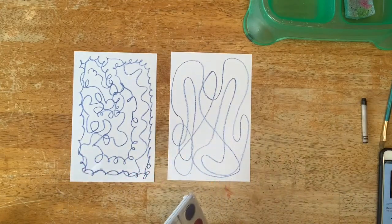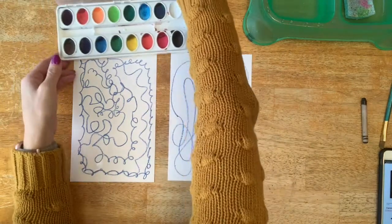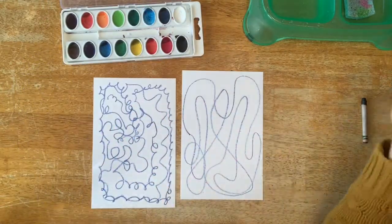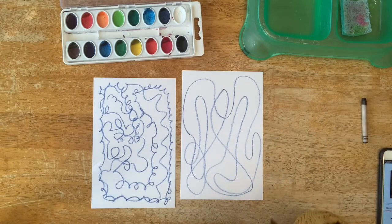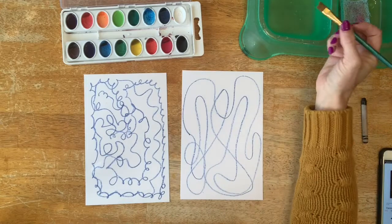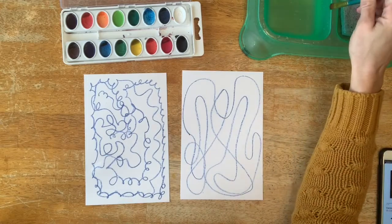And then after they do that with the crayon, they're just going to add watercolor. They're going to fill in all these little spots just however they want. And they can think about maybe colors that they think best fit the one that's fast or slow, but they may just do them both all sorts of colors.